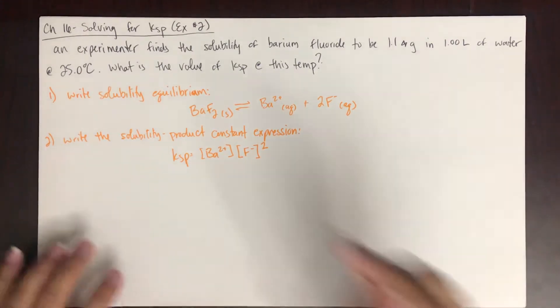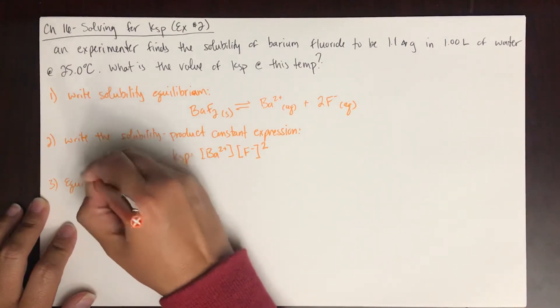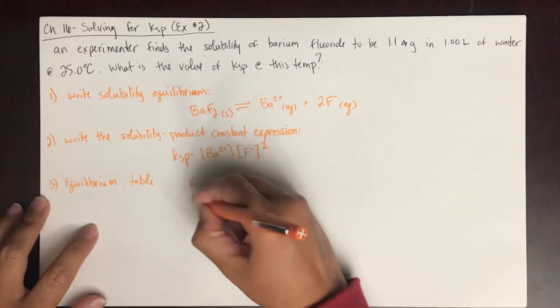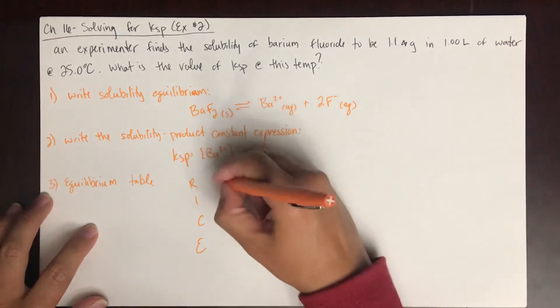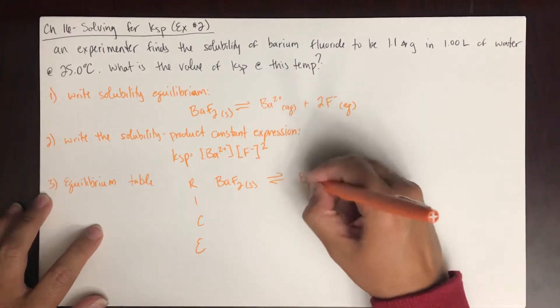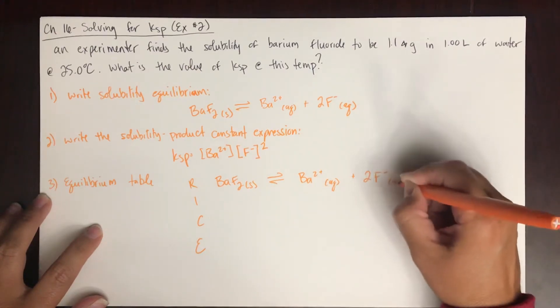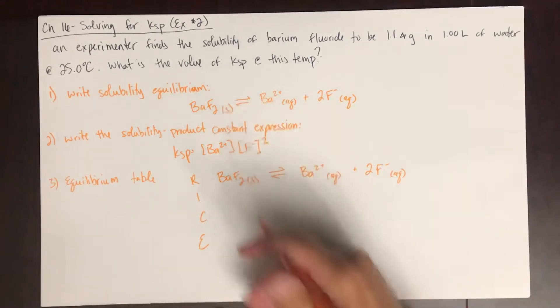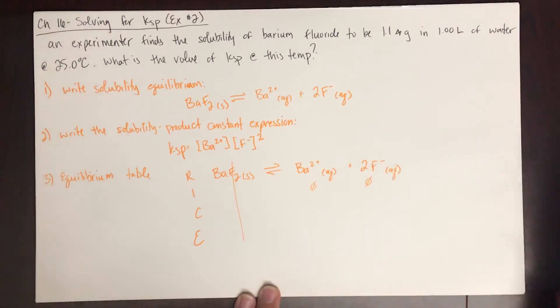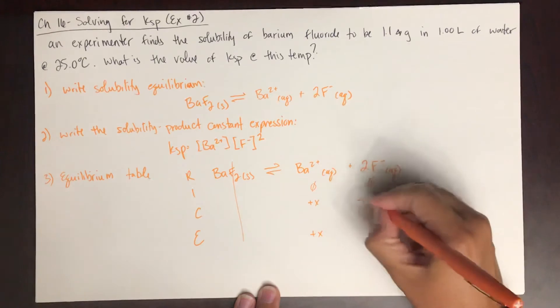So now let's look at the equilibrium table. So I'm going to write out my reaction, initial, change, equilibrium. So I have barium fluoride solid in equilibrium with barium 2 plus aqueous plus 2 fluoride minus aqueous. So again, nothing is in this row because solids are excluded. And we start out with none of these ions, plus X, plus X. Now what's this going to be? Plus 2X.